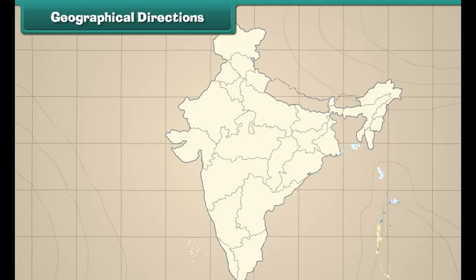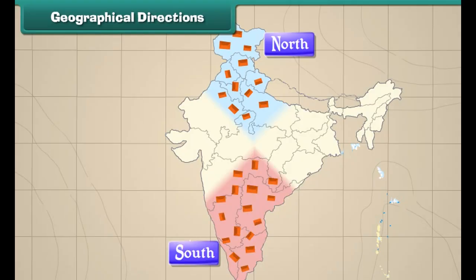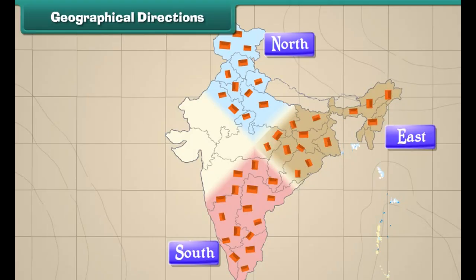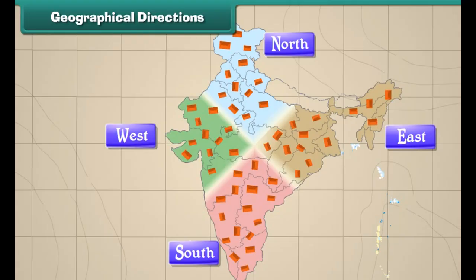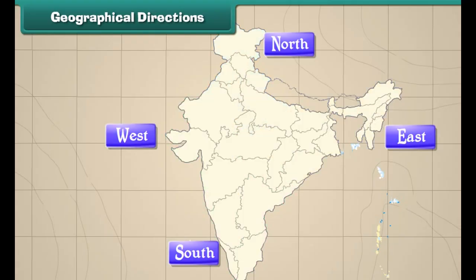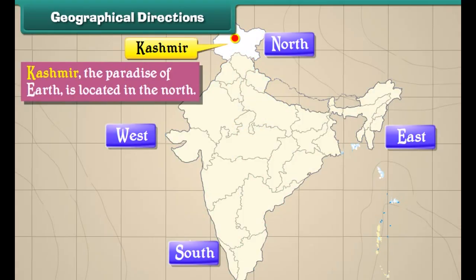People live at different places in India. Some places are in the north while some others are in the south. Some places are located on the east and some others are on the west.